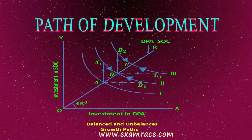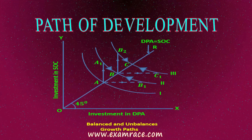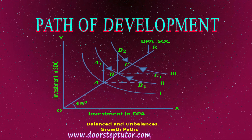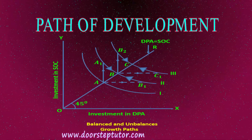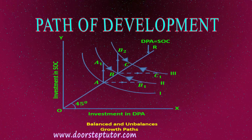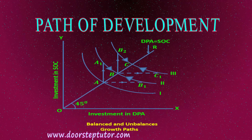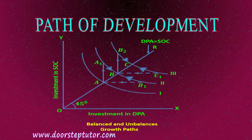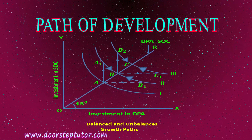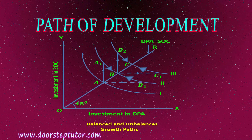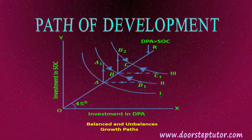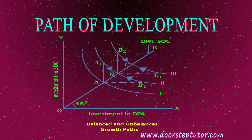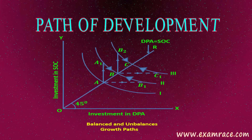In the diagram, 1, 2, and 3 are isoquant curves which show the various combinations of SOC — that is Social Overhead Capital — and DPA — that is Directly Productive Activities. This isoquant curve shows the various combinations of SOC and DPA units which indicate the same level of national output. A line is drawn at 45 degrees called R, known as the line of equality. This line implies that investments in SOC and DPA are in equal amount or equal proportion.